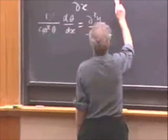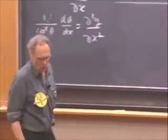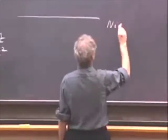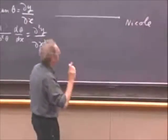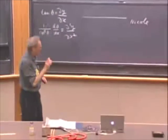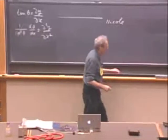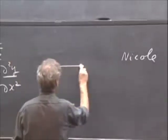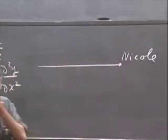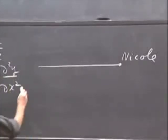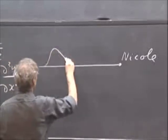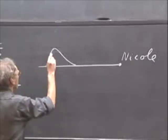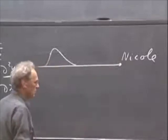So we have here the string that Nicole and I were holding, and here is the end — that's where Nicole was. We know that that end must stay fixed; it cannot move. Here is the end, and my pulse came in — this is the pulse. Let us evaluate the moment in time that this part of the pulse reaches Nicole. Are you ready for that?